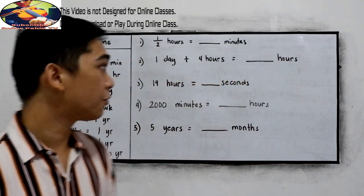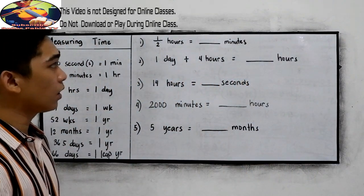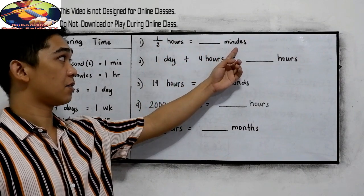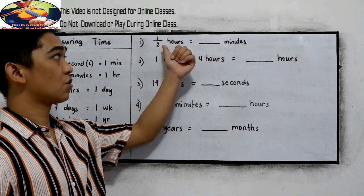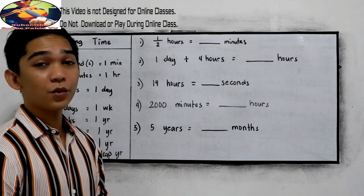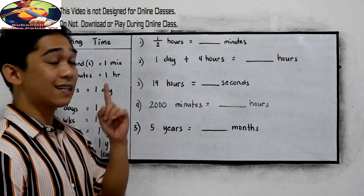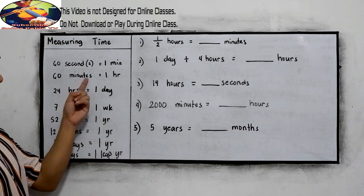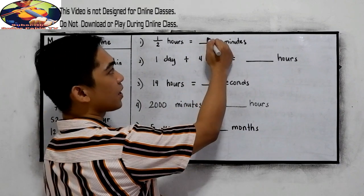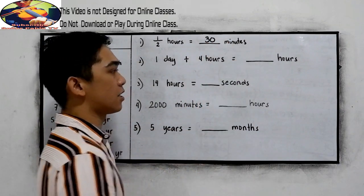Let's say we are going to convert the following. Half an hour is equal to blank minutes. We know that there are 60 minutes in an hour. So half of 60, this will become 30 minutes.